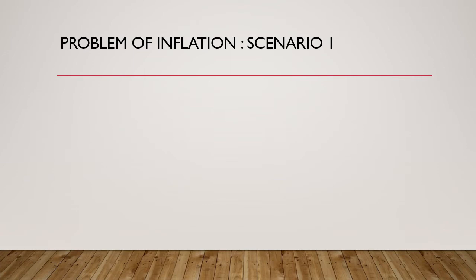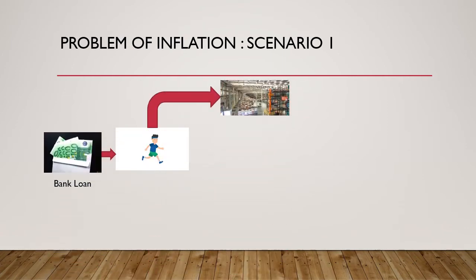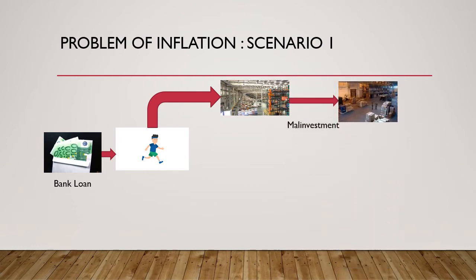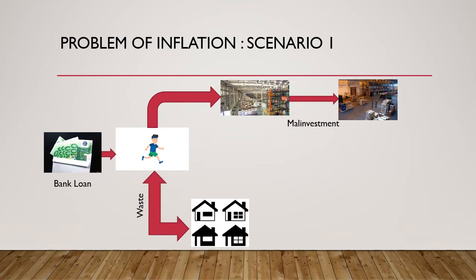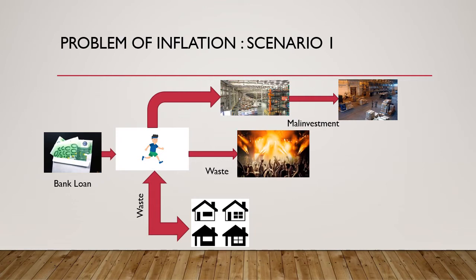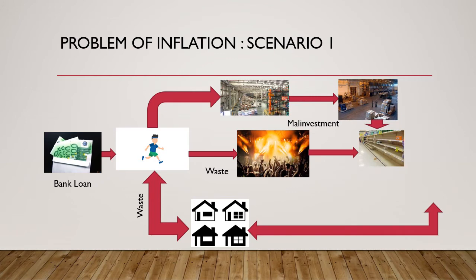But now comes the problem in the form of inflation. The person has taken a loan from the bank, but this time because of some external circumstances or due to wrong decisions, the business turns out bad — a malinvestment. Or the person wrongly speculates in the real estate market, or worse, he just spends it on himself. In all three scenarios, the goods and services are not created as they should have been in the economy. However, we do have credit or money supply that has already been created, so the economy has more money supply than goods and services and due to this mismatch, inflation happens.